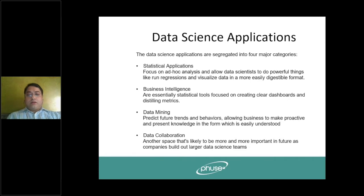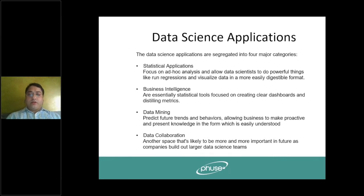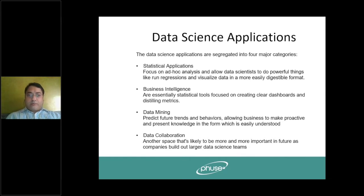If we talk about data science applications, we can segregate them into four major categories. The first is statistical applications — widely used statistical applications include SAS in clinical trials and data analytics, R language which is extremely popular for analyzing data and has a vast library of open-source statistical packages, and Tableau which is used for visualizing data by businesses and academics.